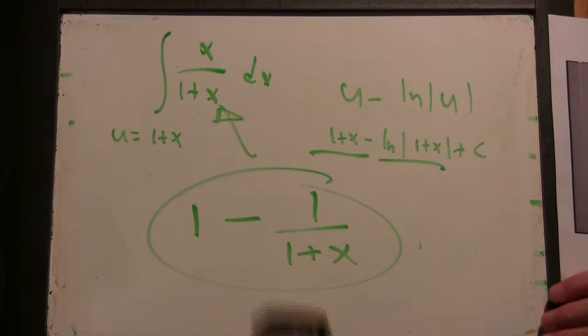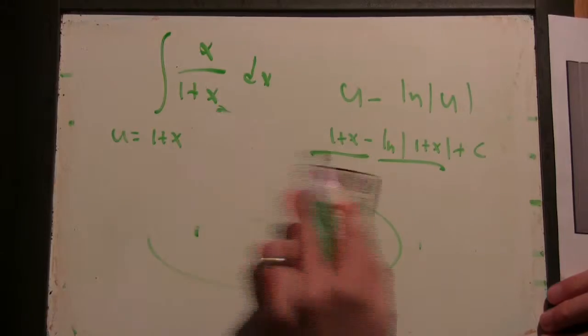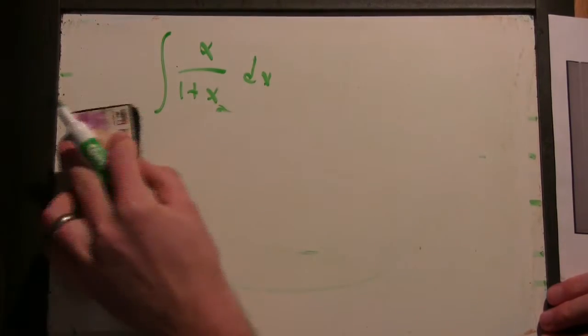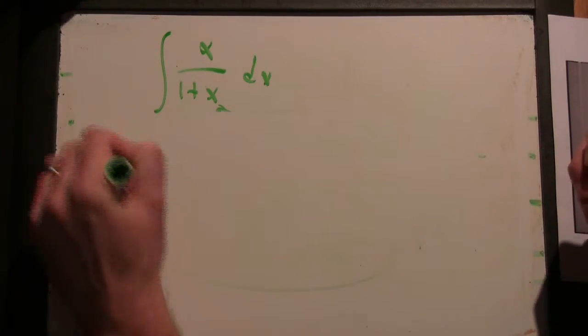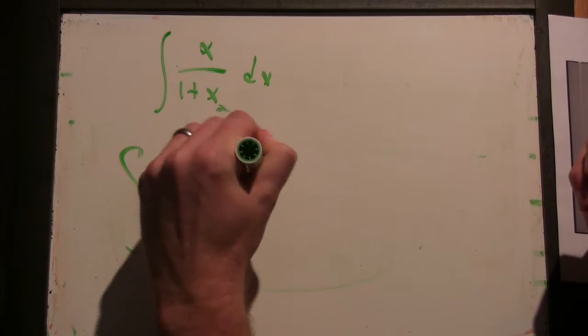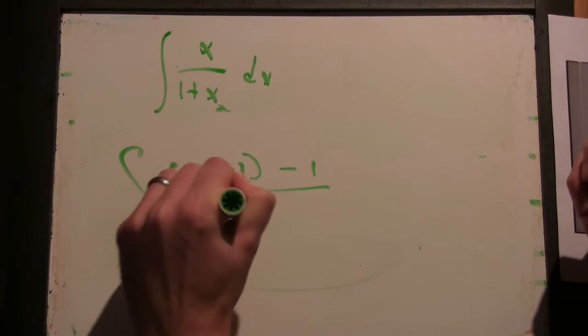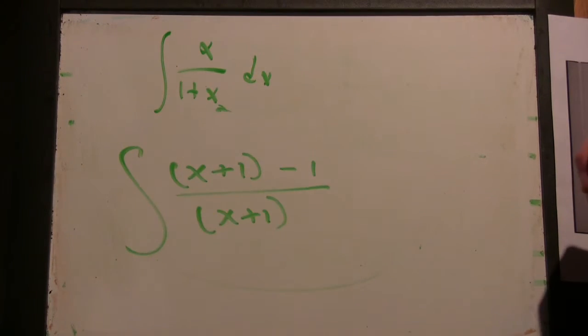Another way you can see this approach on this one is you can just write the top as x plus 1 minus 1 over x plus 1. Yeah, so you get 1 minus 1 over x, which is what you got. But good.